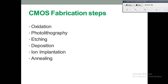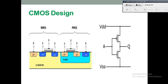Moving on to the CMOS design. CMOS is a basic structure used in semi-custom and full custom designs, and we are discussing the layout of the CMOS design. In this slide we represent the side view of the CMOS design and the circuit diagram. CMOS — Complementary Metal Oxide Semiconductor — contains one NMOS and one PMOS transistor and works as an inverter, providing an output opposite to the input.